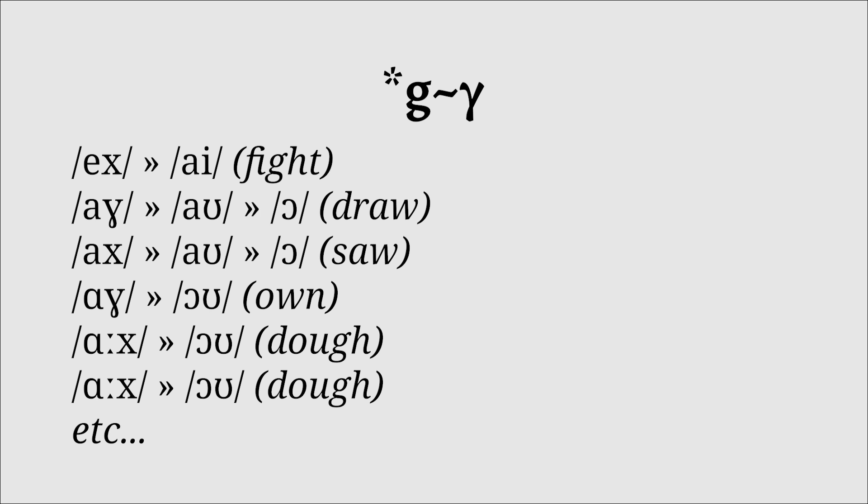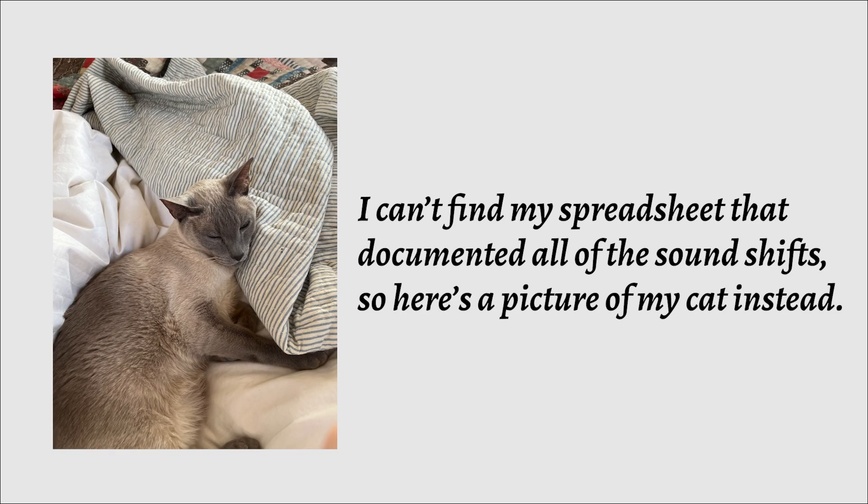Well, it doesn't end there, because CH then drops out of the language when after a vowel, giving rise to a whole host of new diphthongs. CH also merges with F in some dialects, giving rise to forms like tough and rough, giving us this beautiful mess of a table.